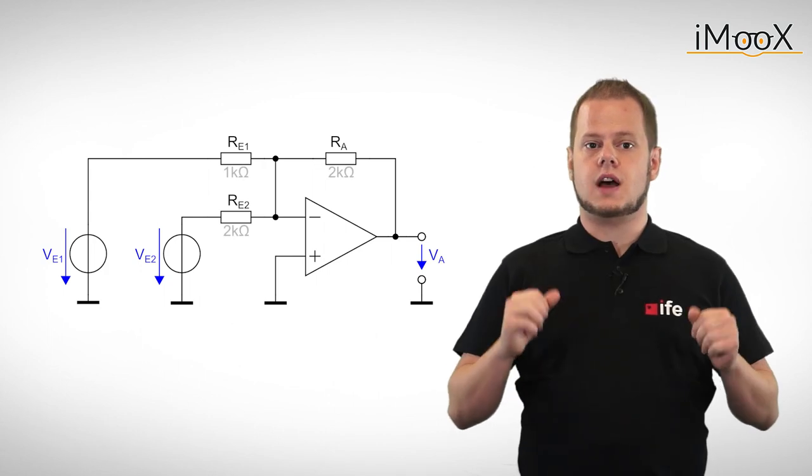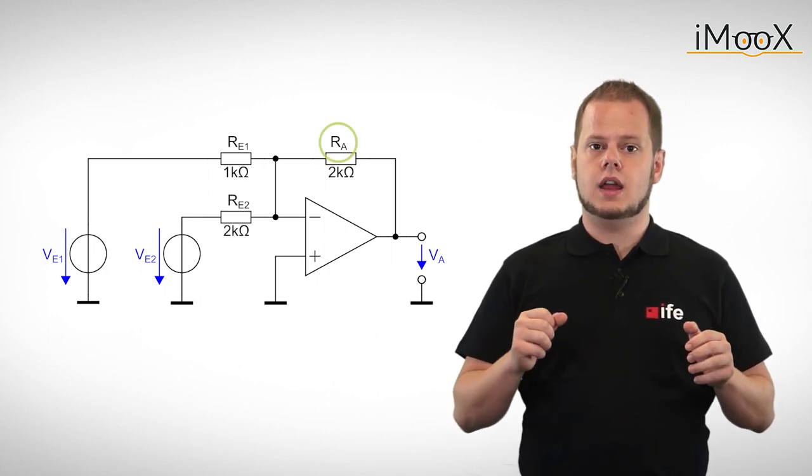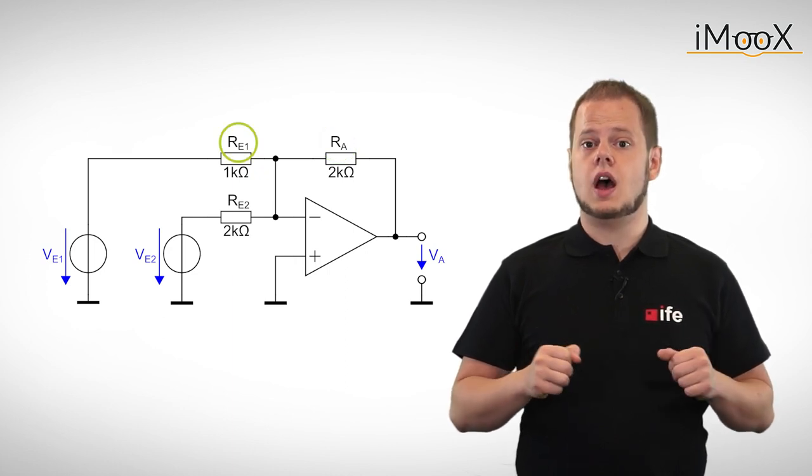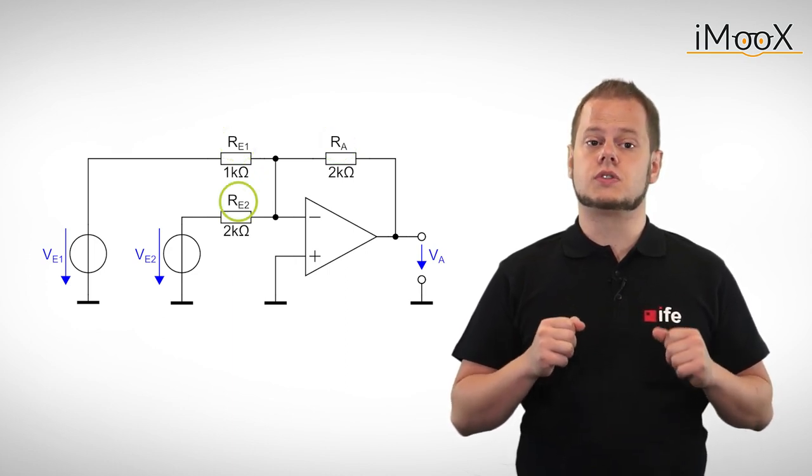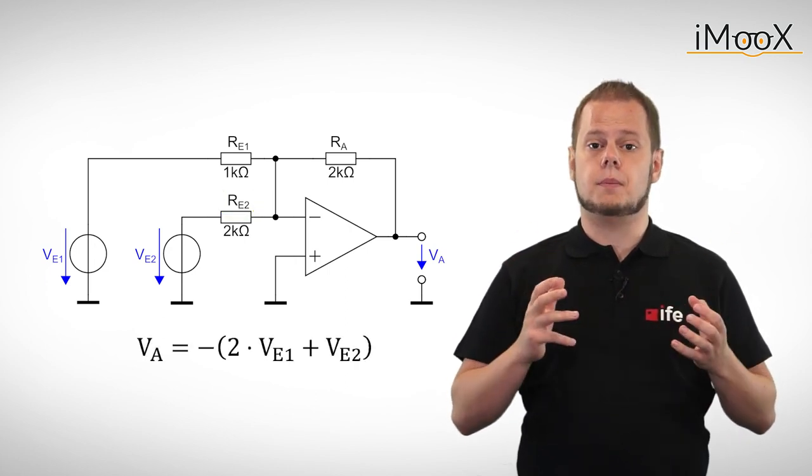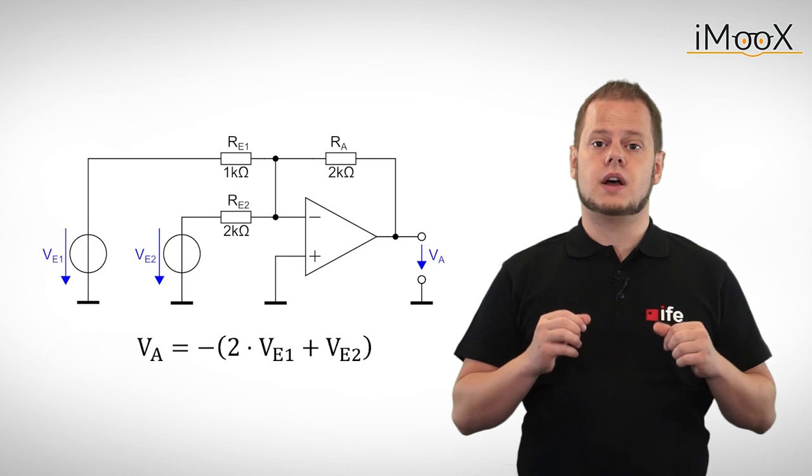As a small example let's assume Ra equals 2 kiloohms, Re1 equals 1 kiloohm and Re2 equals 2 kiloohms. The output voltage equals the negative sum of 2 Ve1 plus Ve2.